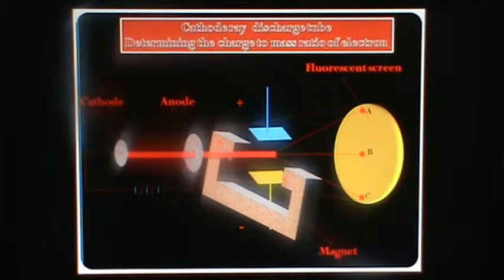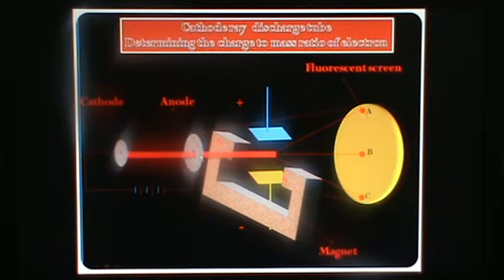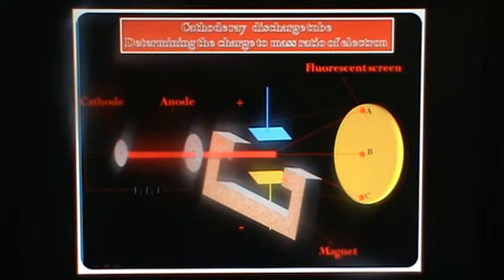Here you can see this is a cathode discharge tube. It has a cathode and an anode. These cathode and anode are connected with the battery.